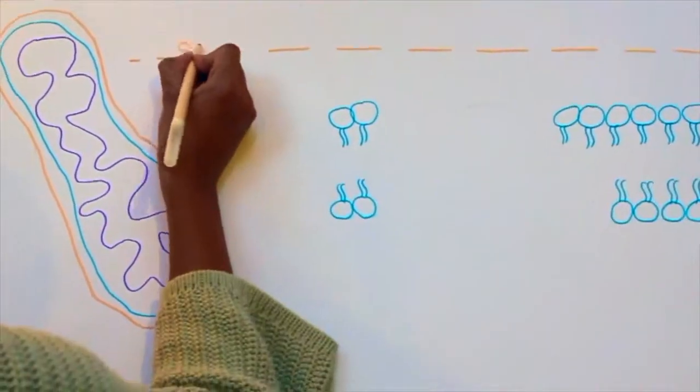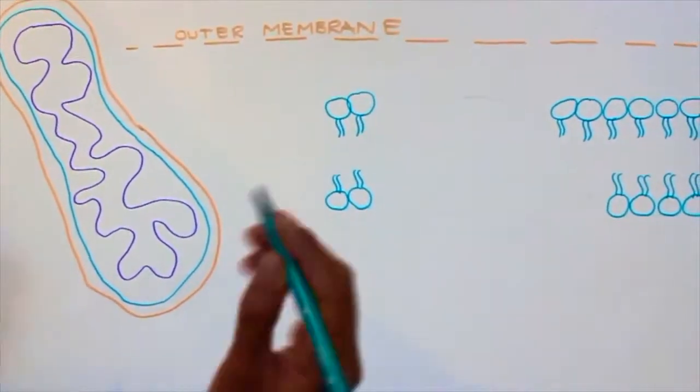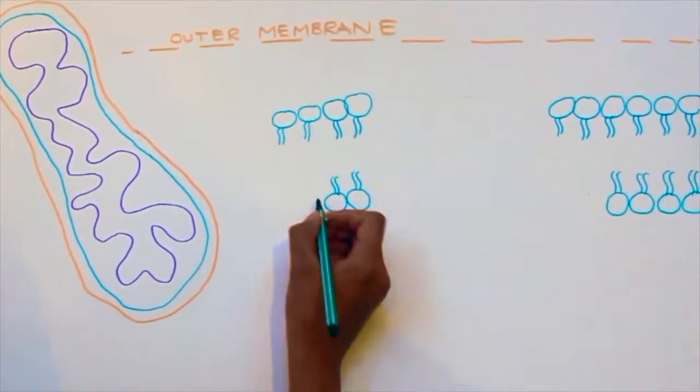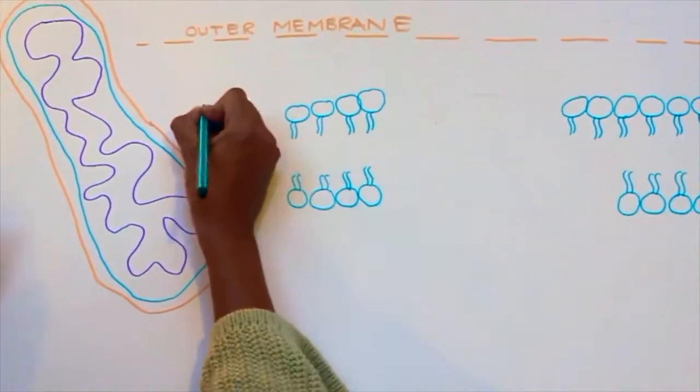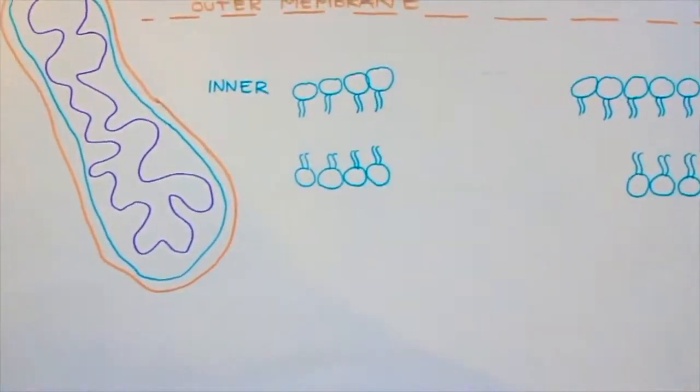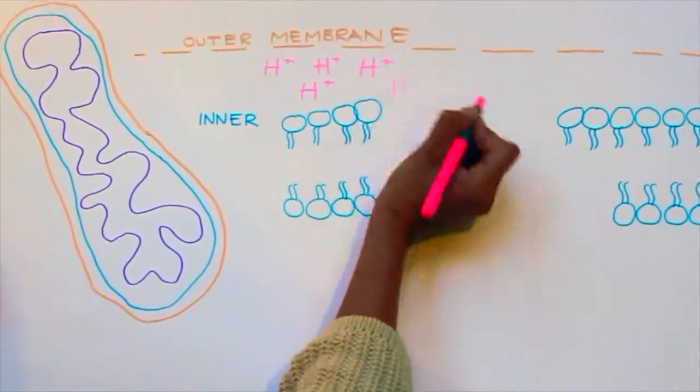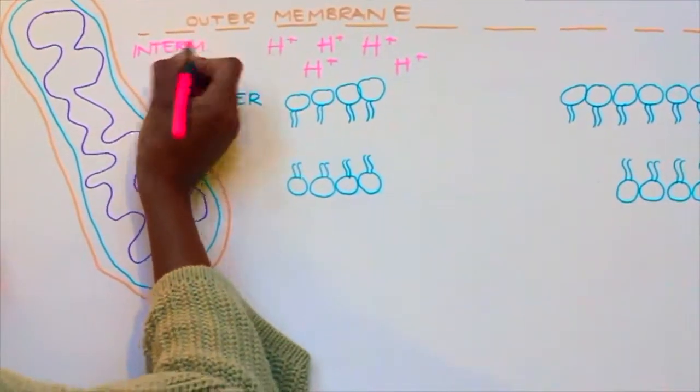The outer mitochondrial membrane is porous and is permeable to small molecules. The inner membrane, on the other hand, is composed by a phospholipid bilayer which makes it impermeable to small molecules and ions, including protons. This creates a space between the two called the intermembrane space.